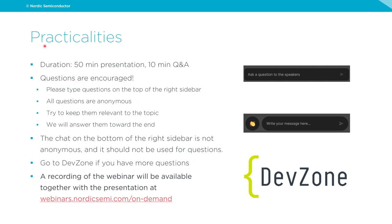Before we get started, just a few practicalities. The webinar will have a duration of about 50 minutes with 10 minutes for Q&A at the end. Questions are highly encouraged — please type your questions on the top right sidebar in the dedicated question box. All questions are anonymous, so please keep them relevant to the topics presented during the webinar.